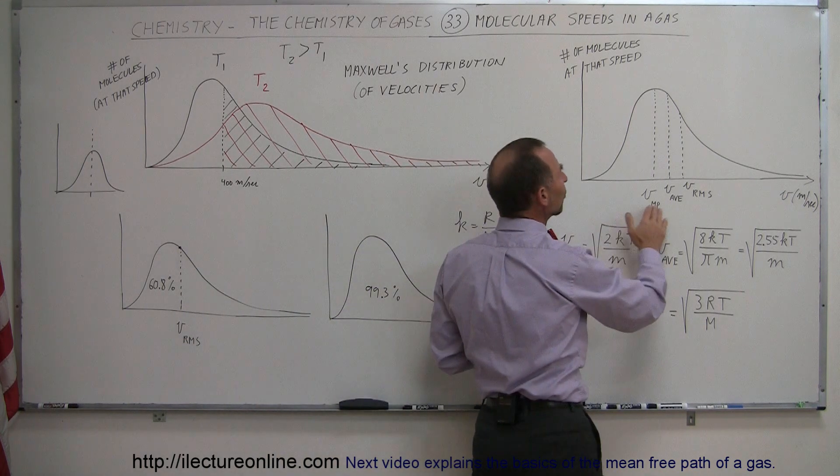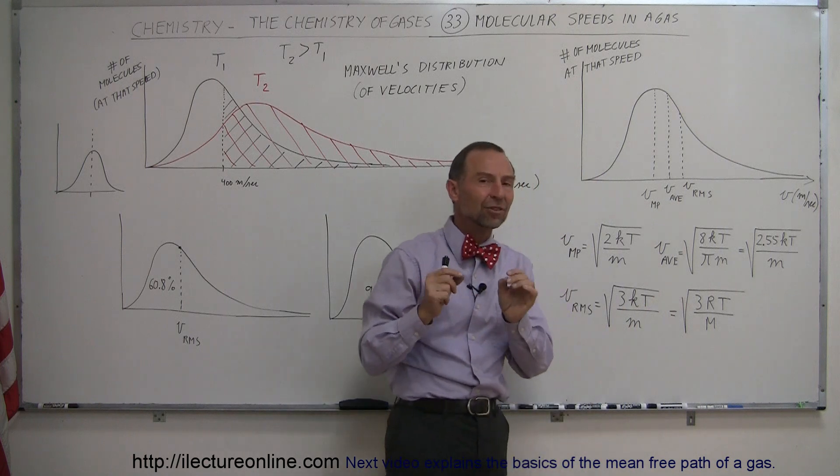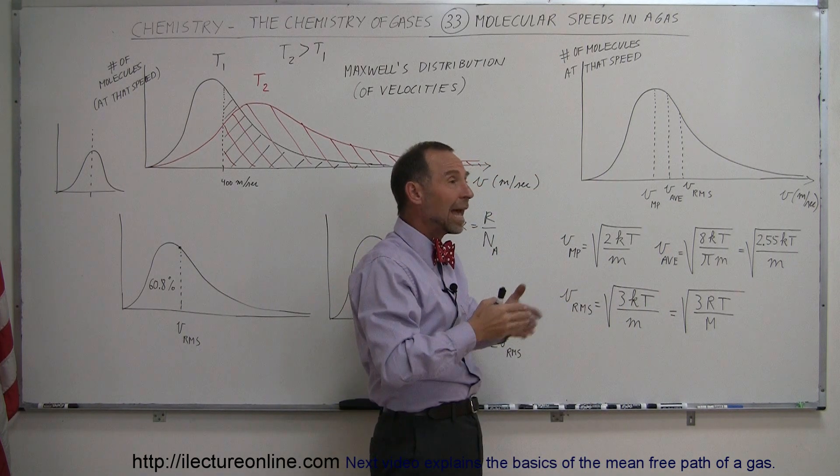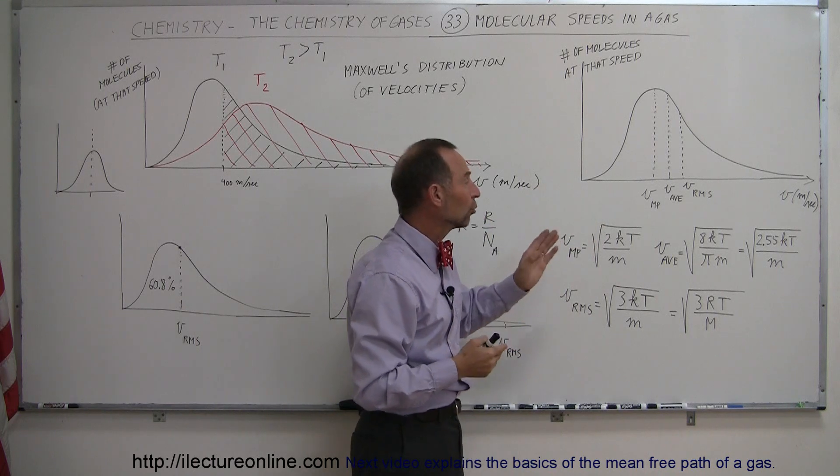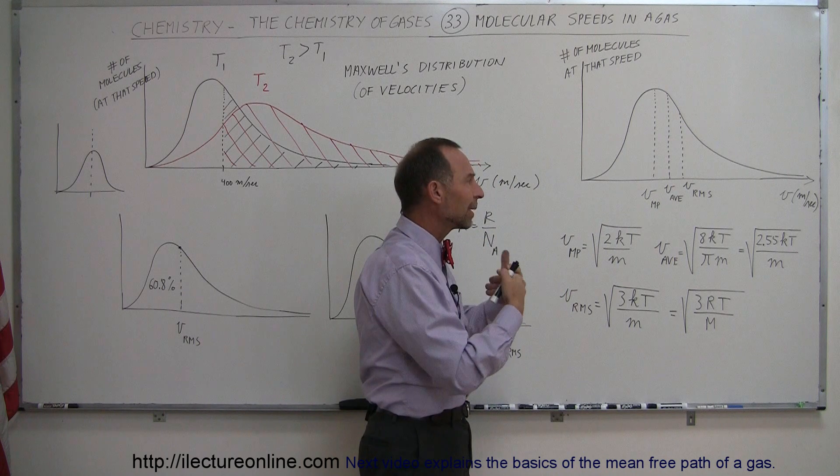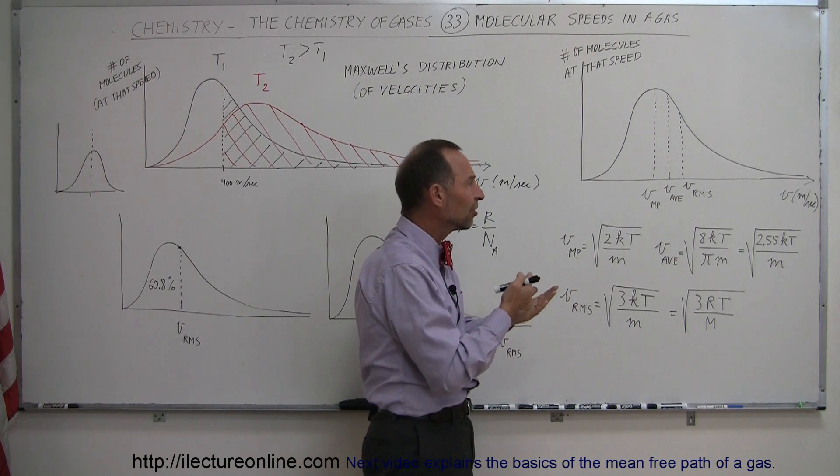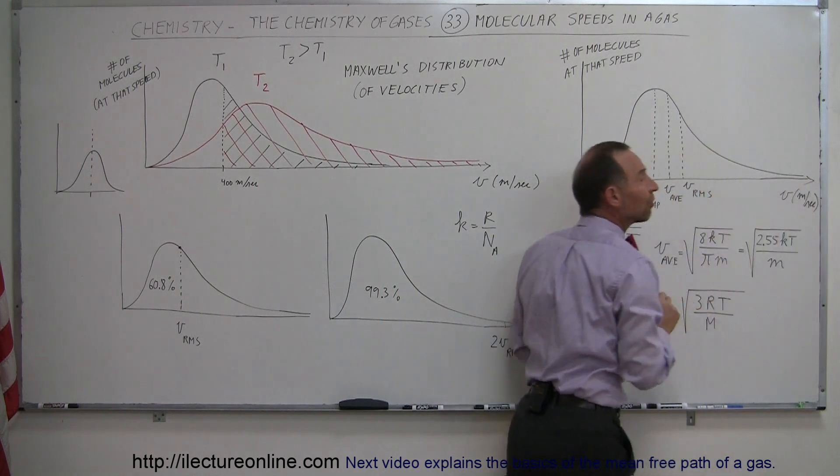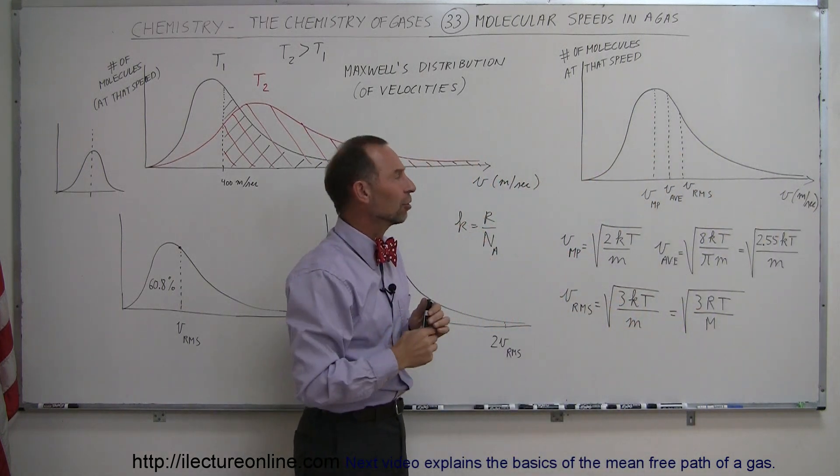Now we can also find the average speed of the molecules. If we take every single molecule in a container of gas, figure out its speed, add it all up, divide it by the number of molecules, we end up with the average velocity. But the average velocity from a kinetic point of view is not the representative velocity of all the molecules because there are some molecules that travel much faster than average and they kind of throw out that average.